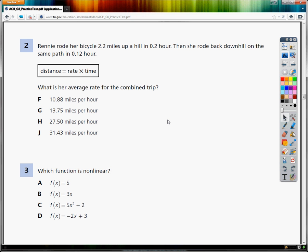Alright, this is the second question, TCAP 8th grade math practice test. The question says, Rennie rode her bicycle 2.2 miles up a hill in 0.2 hours. Then she rode back down the hill on the same path in 0.12 hours.